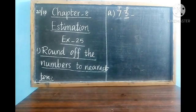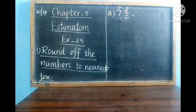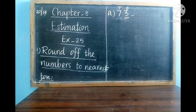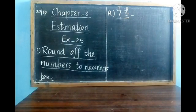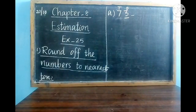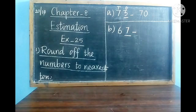Is 3 greater than 5 or smaller than 5? 3 is smaller than 5. As 3 is smaller than 5, we write the nearest 10 as 70 — because 7 is in the tens place. If the ones digit is 5 or more than 5, we write the next 10. The next 10 of 70 is 80. But here 3 is in the ones place, so the nearest 10 is 70. The answer is 70.